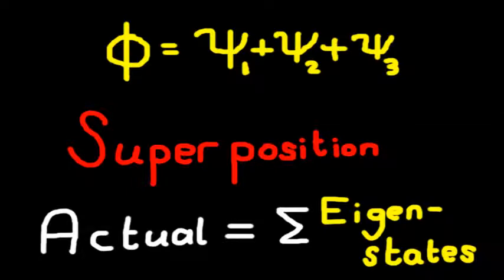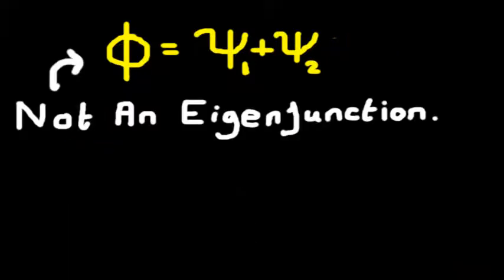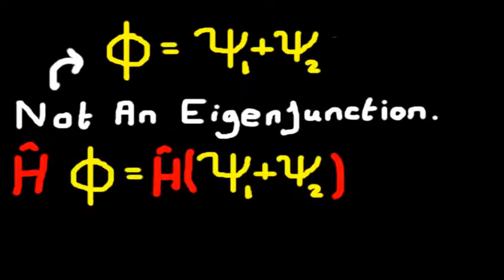Importantly, superposition doesn't mean any arbitrary state is allowed — just combinations of these special eigenstates. This is one of the more interesting ideas about quantum mechanics and will be responsible for most of the cool experiments we'll discuss in part 3. Now, the state that is a sum of eigenfunctions is no longer itself an eigenfunction. However, it is still a real wave function, and you can produce it in experiments. Let's quickly show this by constructing a system from different energy eigenfunctions and showing that it is not itself an energy eigenfunction.